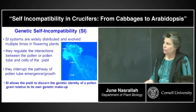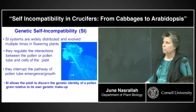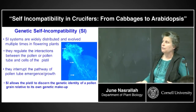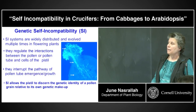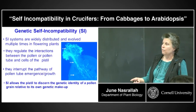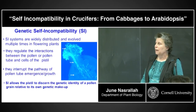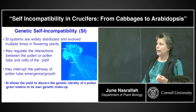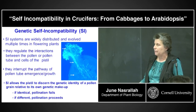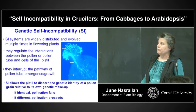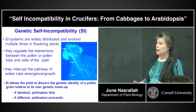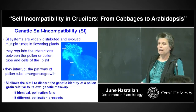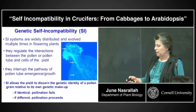Even though the molecular basis of these different self-incompatibility systems differ in different families, they all have the same end result: to allow the pistil to determine the genetic identity of a pollen grain or pollen tube relative to its own genetic identity. If the pistil cell determines that the genetic makeup is identical to its own, pollination fails. If it's different, pollination proceeds.